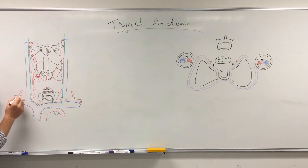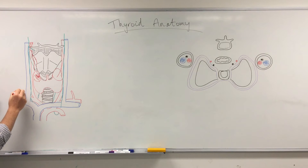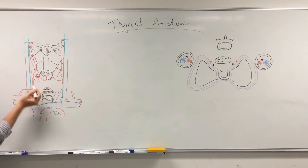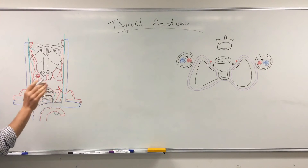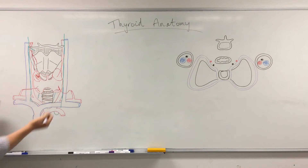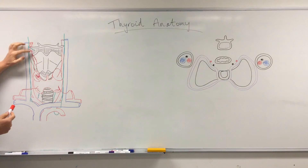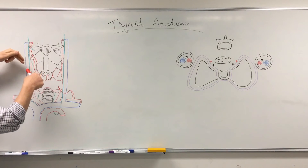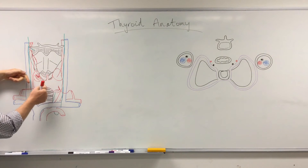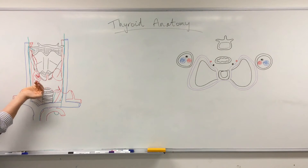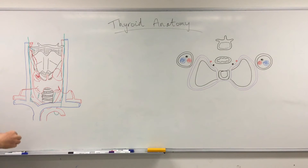The second arterial supply comes from the thyrocervical branch of the subclavian artery. This gives a large branch that passes behind the thyroid alongside the recurrent laryngeal nerve, supplying the inferior and posterior portions of the gland on both sides. In summary, the thyroid receives two sets of arteries: the superior thyroid artery dividing into anterior and posterior branches, and the inferior thyroid artery supplying the inferior and posterior surface.